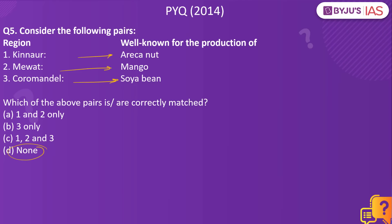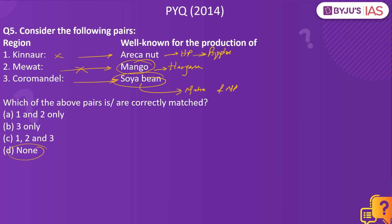When you look at Kinnaur, it is in Himachal Pradesh — but it is known for apples, not Arcanat, so this is a wrong pair. For Mewat, it is in Haryana and known for agriculture with allied activities, but mango is not grown there — so the second option is wrong. For the Coromandel region, while rice, pulses, and sugarcane are present, it is not known for soyabean. The regions where maximum soyabean is grown are Maharashtra and Madhya Pradesh. Since Coromandel is not known for soyabean, this is also a wrong pair — so the answer is none.